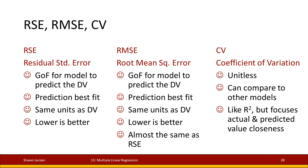CV is short for coefficient of variation. It is unitless — it does not have the same units of your dependent variable. Because it is unitless, it's a standardized number, so we can compare it to any other regression model, even if the dependent variable and predictor variables are completely different. We can take an apples model, an oranges model, a steak model, and compare them.